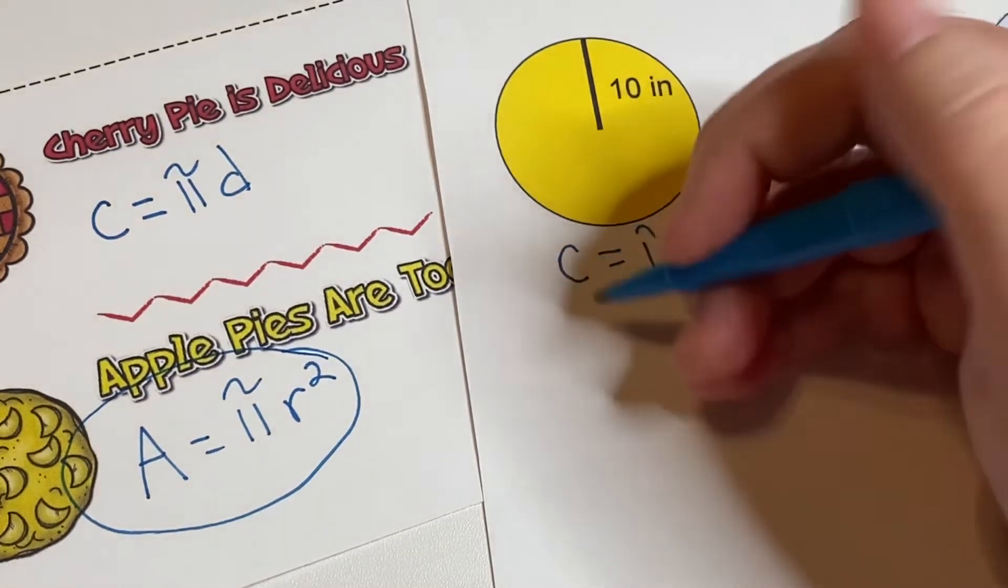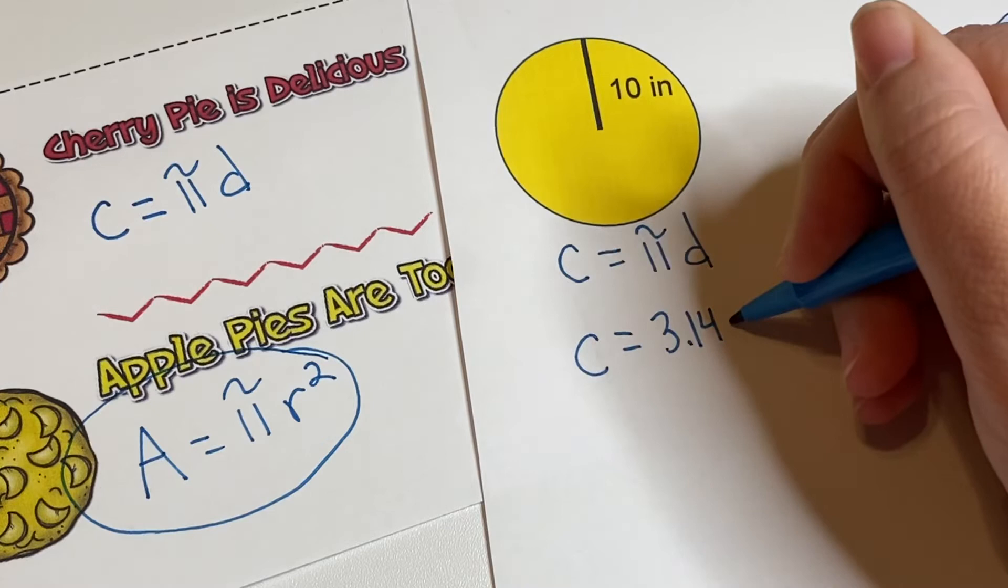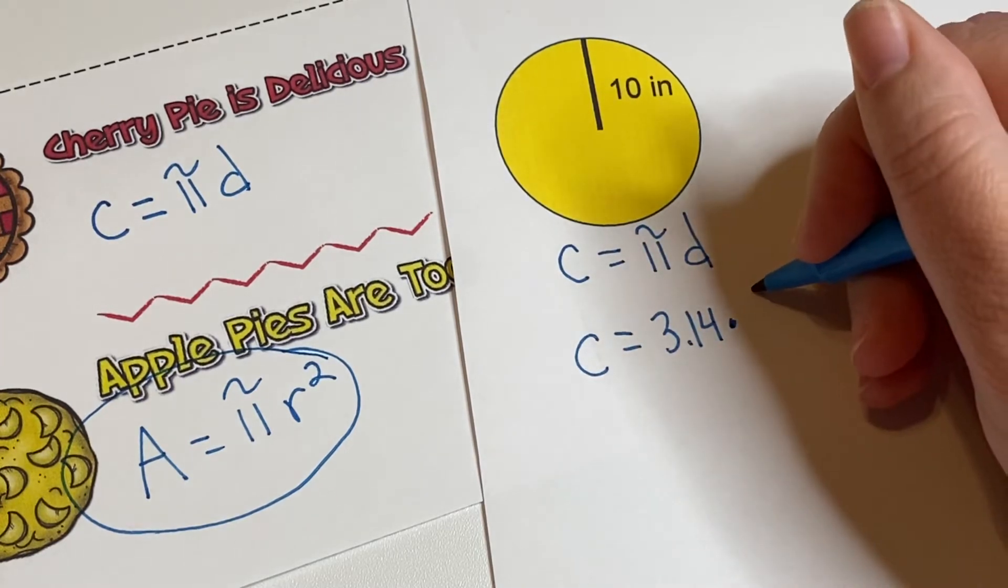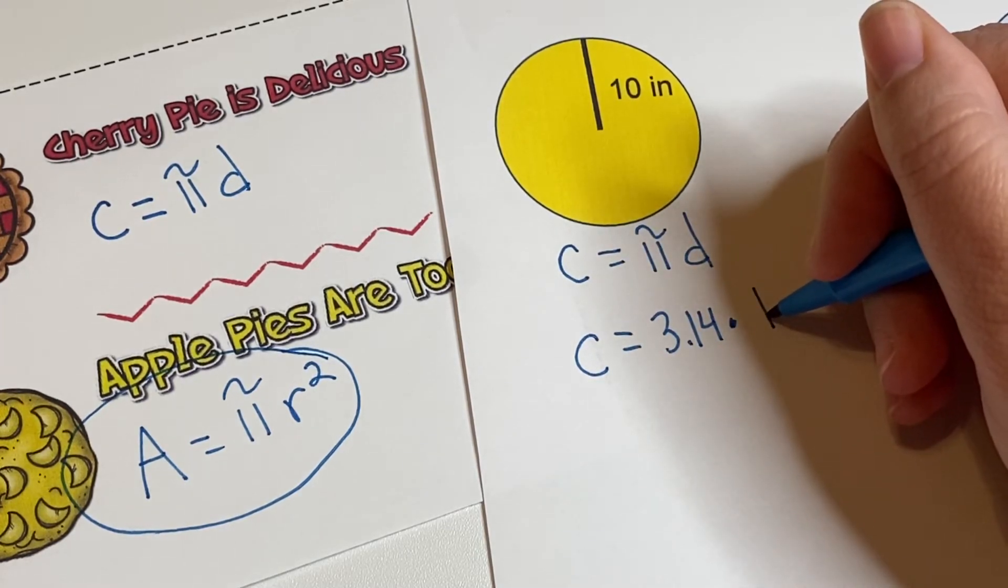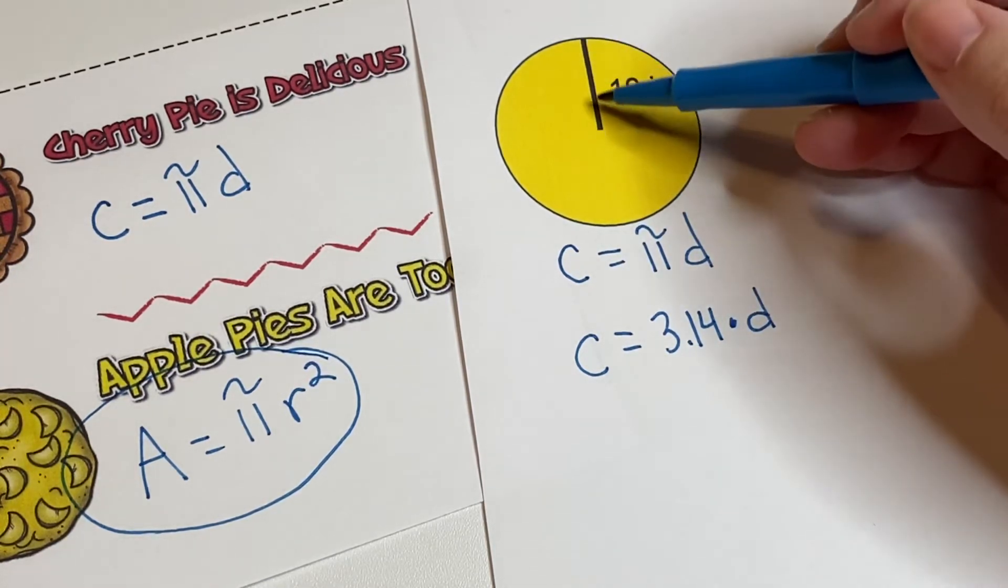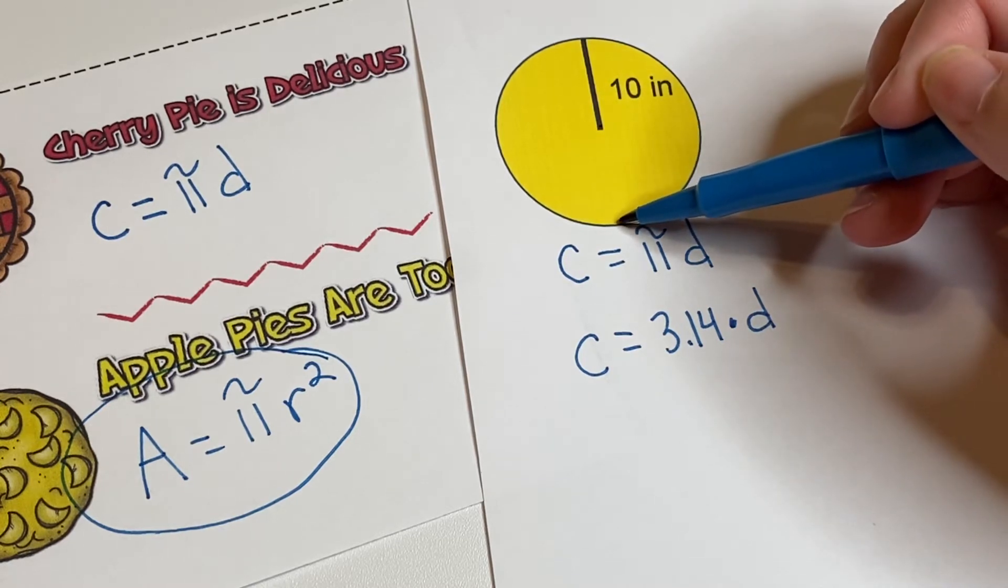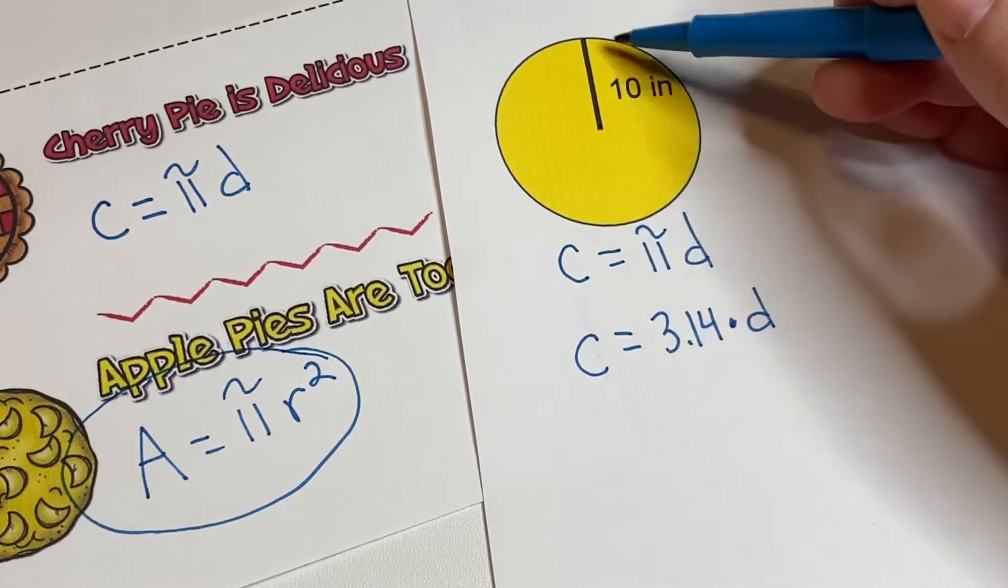What we're going to do is we don't know the circumference, but we do know pi is 3.14, and we're going to times that by the diameter. We actually don't know the diameter because we have the radius. If halfway across is 10, then all the way across is 20.